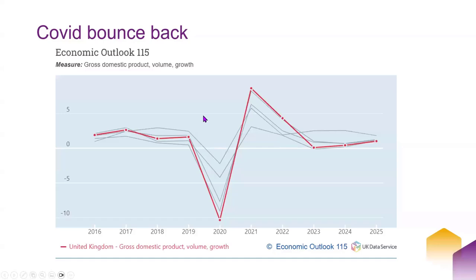An example from the OECD Economic Outlook — like the World Economic Outlook, it also has a degree of forward-looking data. This shows gross domestic product by volume and growth for Germany, France, Italy, Spain, and the UK (in red). During the COVID shutdown, the UK suffered slightly more than other countries, but the bounce-back was greater than most. Then we had a dip back to normal levels.